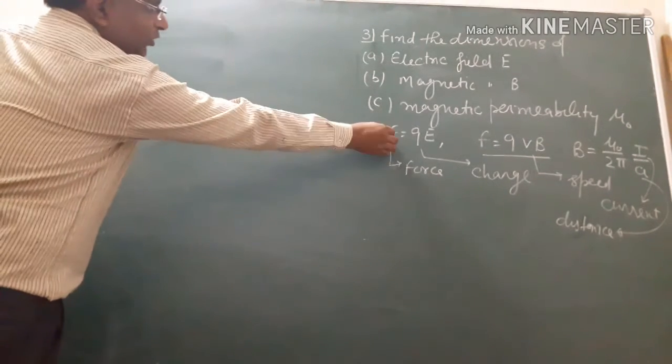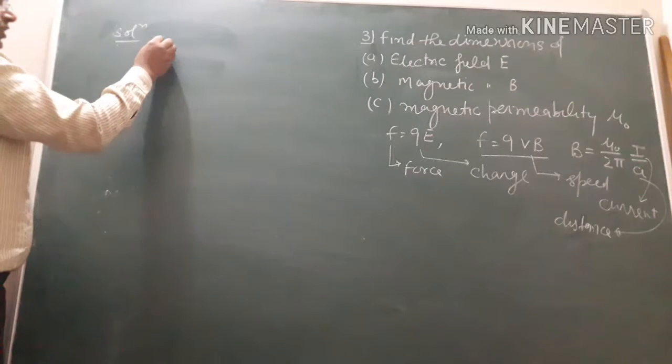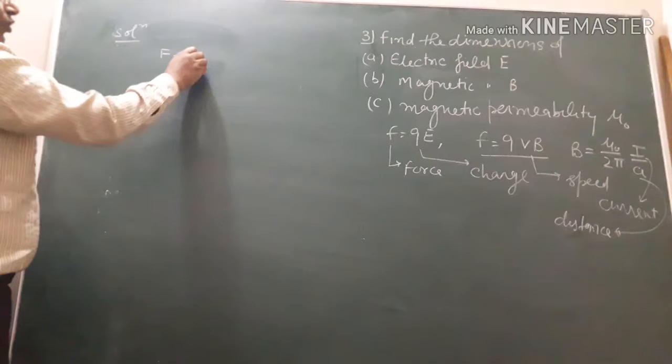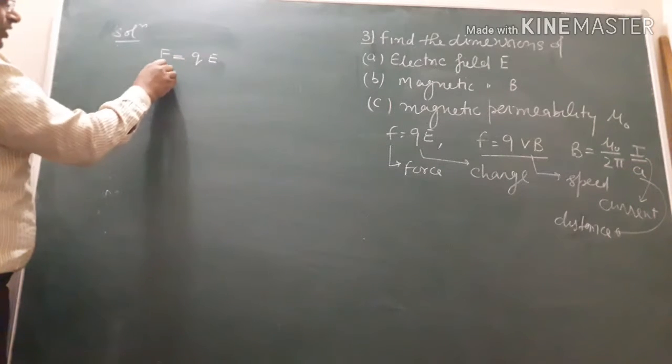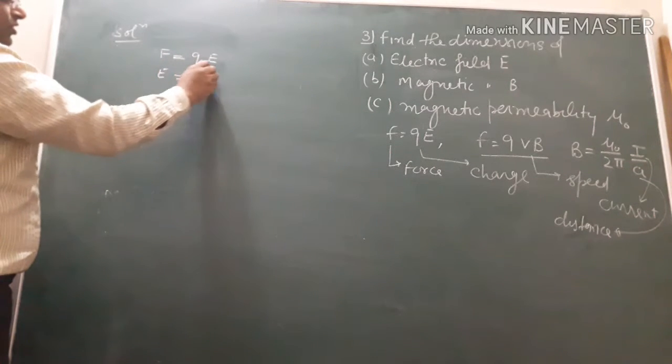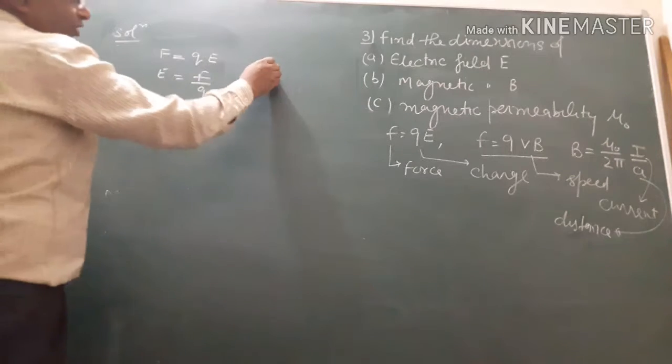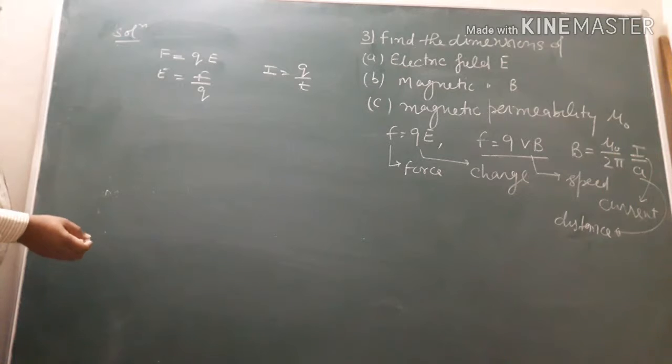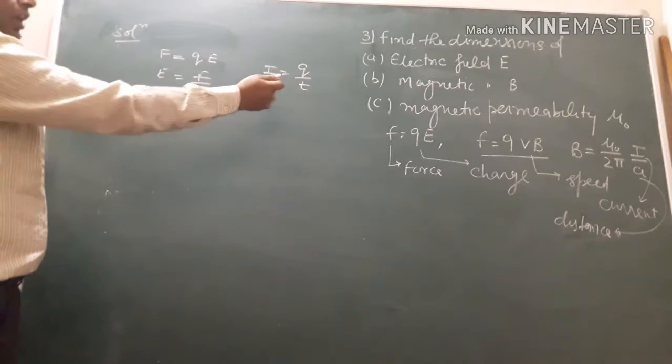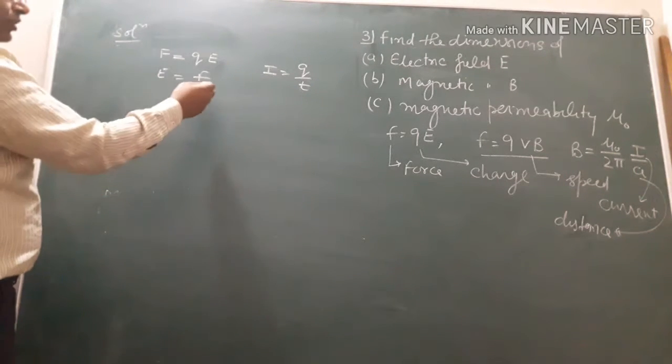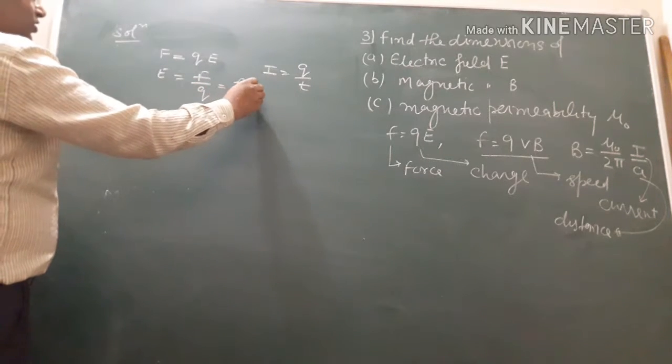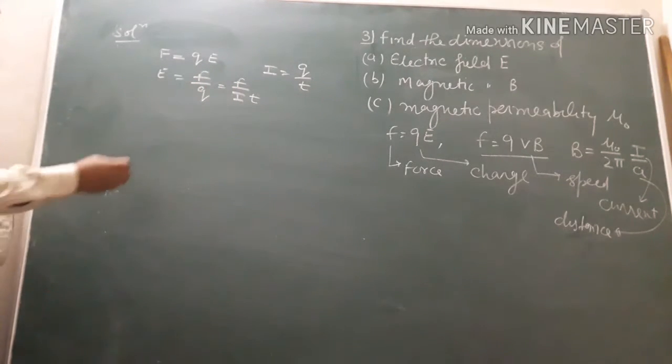This is related to the force formula. We should use force F equals q into E, which is force upon charge. Current is charge upon time - the flow of charge in unit time, in one second, is called current. So F upon I t will be electrical field.